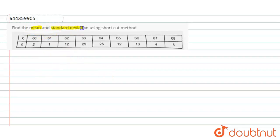find the mean and standard deviation of the given data using the shortcut method. So the shortcut method is using the assumed mean method, right? So let's solve this equation. First of all, let me write the data in the tabular form.